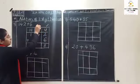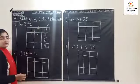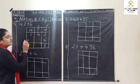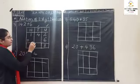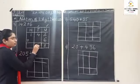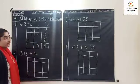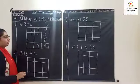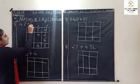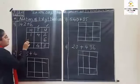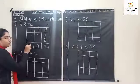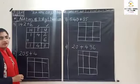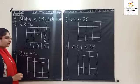After units place, come to tens place. Four plus zero — so four plus zero is equal to four. There is no digit means zero. Now come to hundreds place: one plus zero is equal to one, because zero has no value.